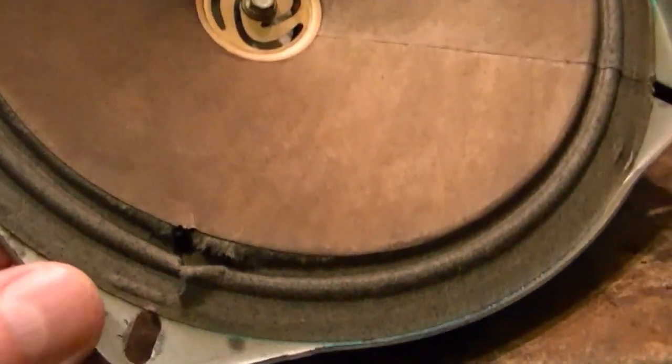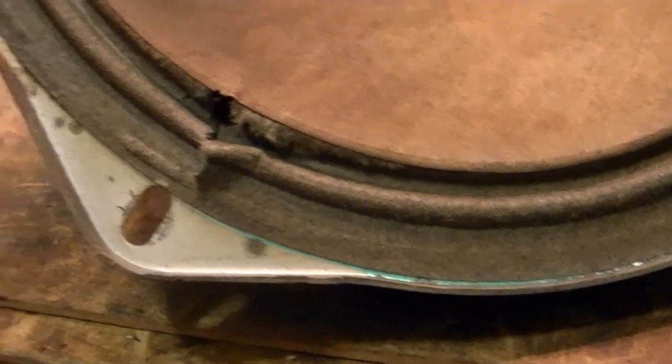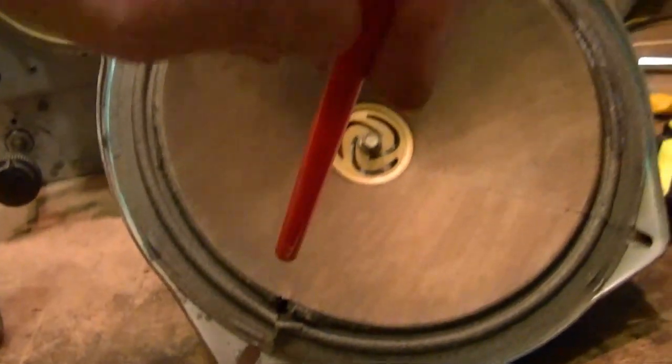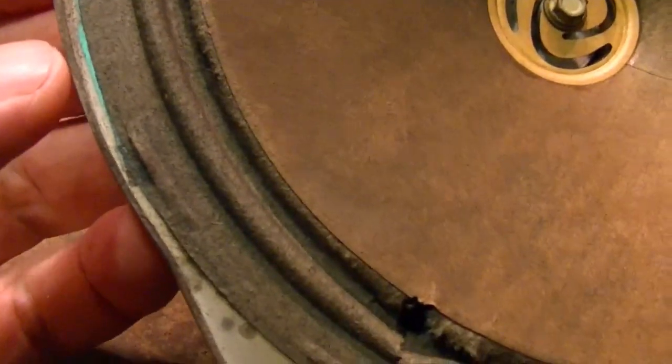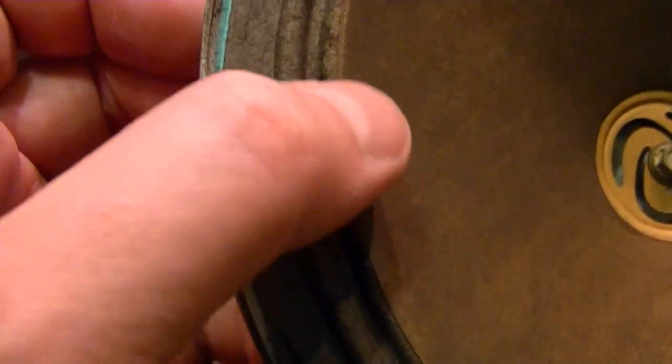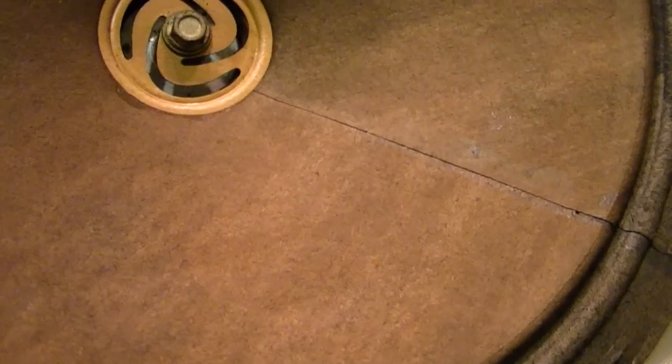That hole at least I know where that came from because that corresponds to a hole in the grill cloth. This was there when I got it, like a kid had stuck a pencil right through the grill cloth into the speaker. But these torn edges, I don't know. It's a lot easier to just dab a little glue on that than to even think about replacing the cone.